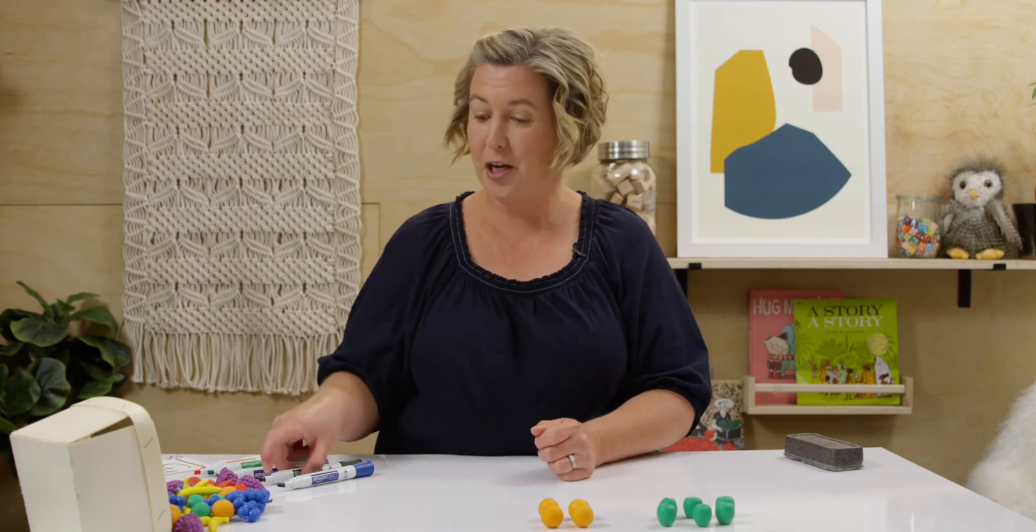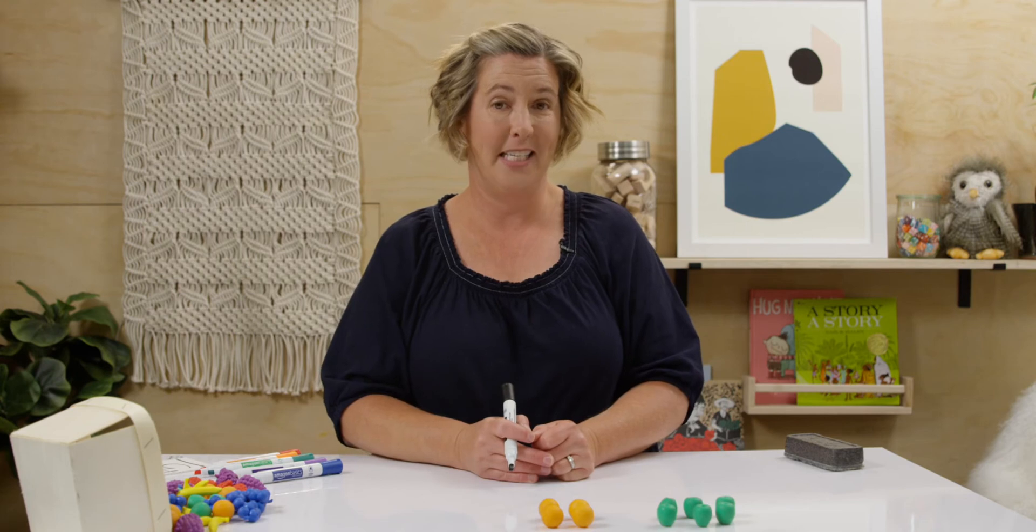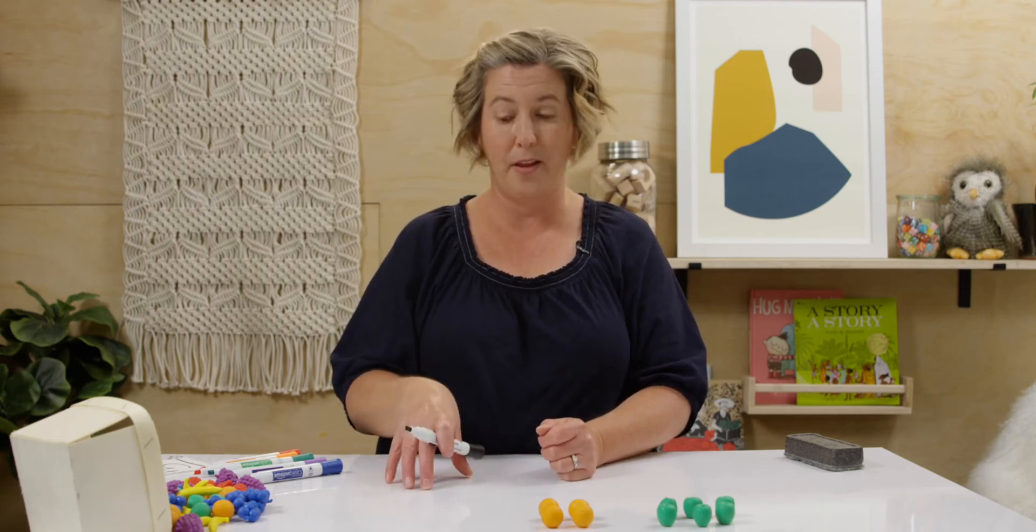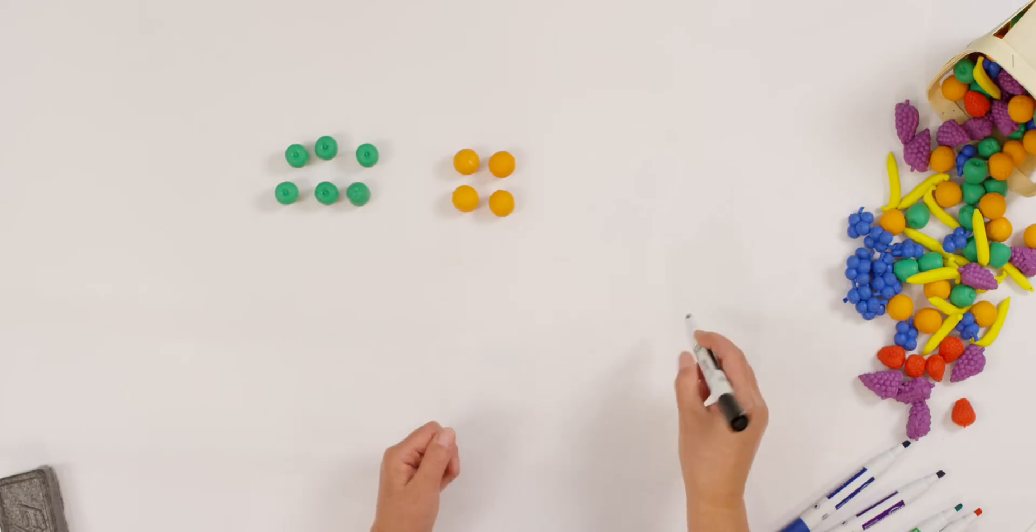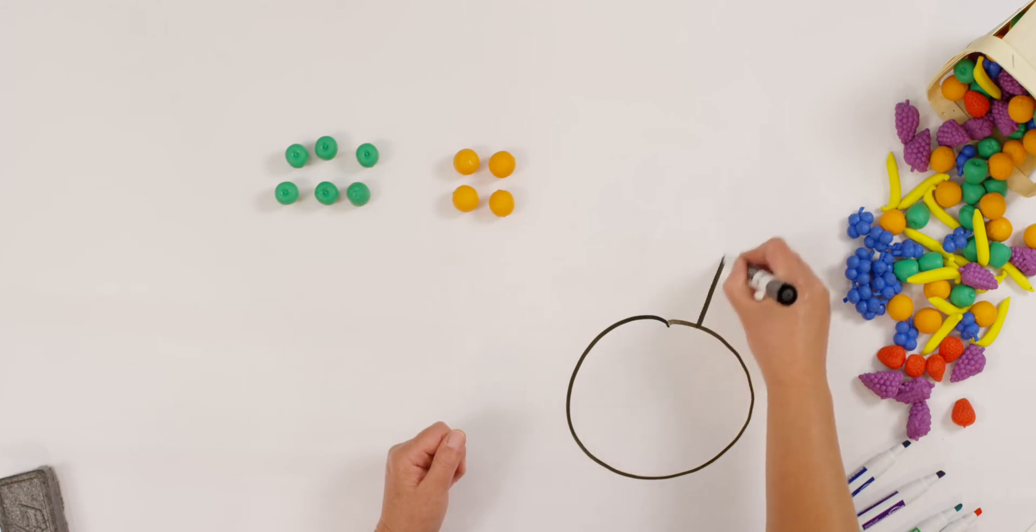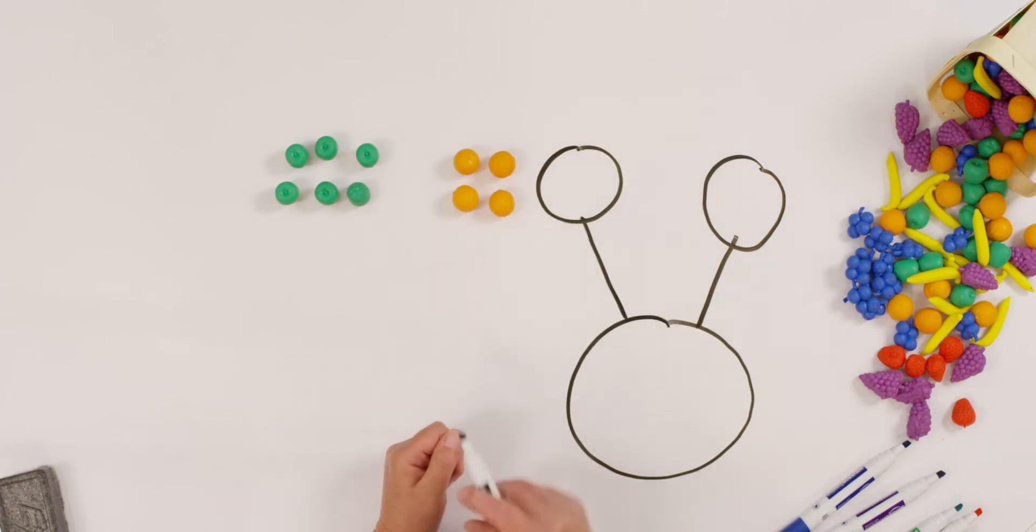Ten. Let's show that with our number bond. Watch how I make my number bond template this time. I'm going to start with my hole at the bottom and then put my parts on the top. Remember, it doesn't matter which way your number bond template faces. The hole is still the hole and the part is still the part. Do you see how I did that? This way kind of looks like an alien to me.